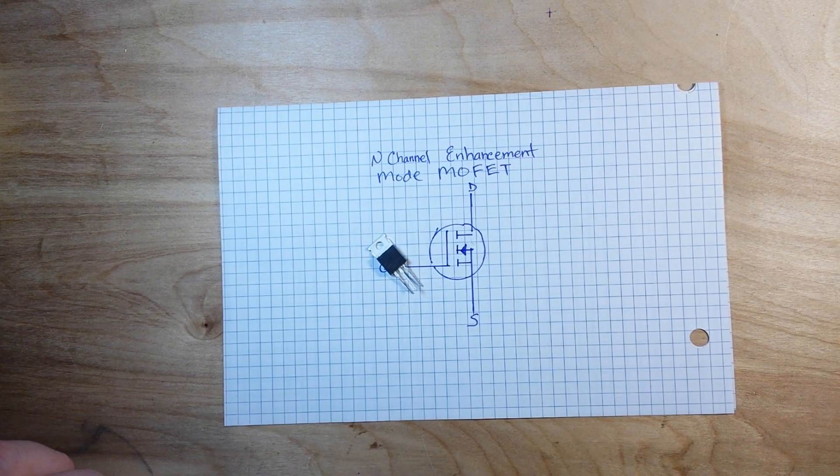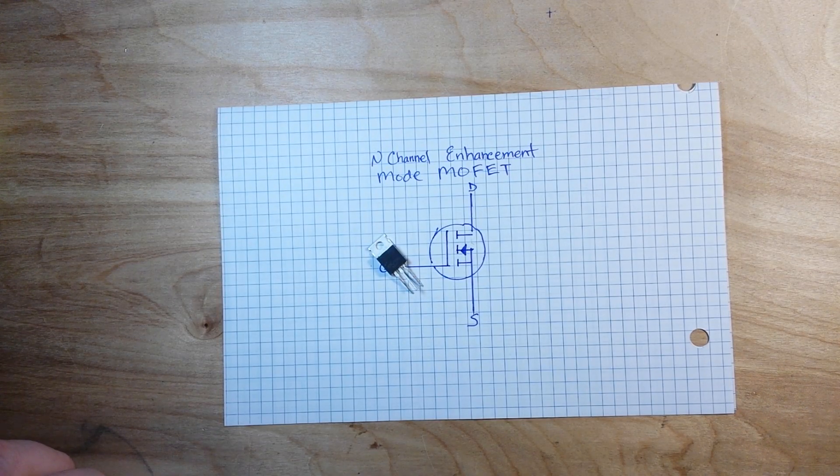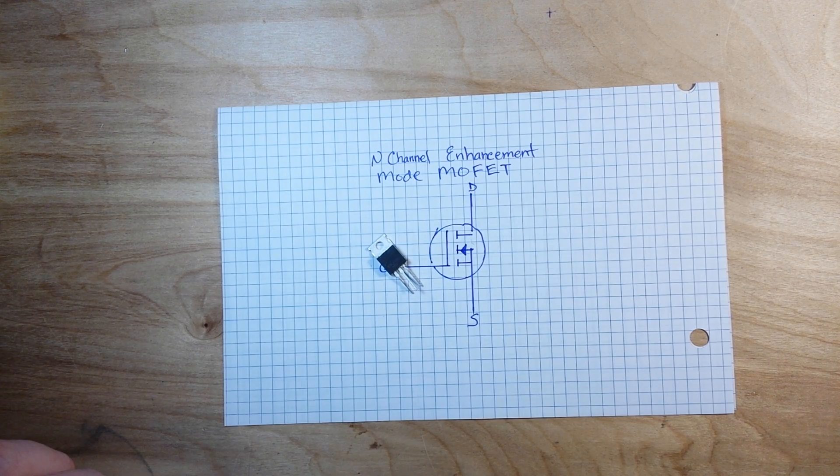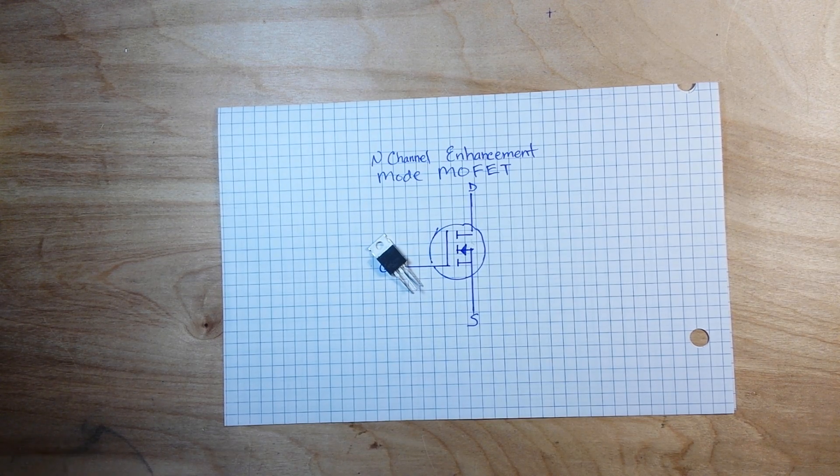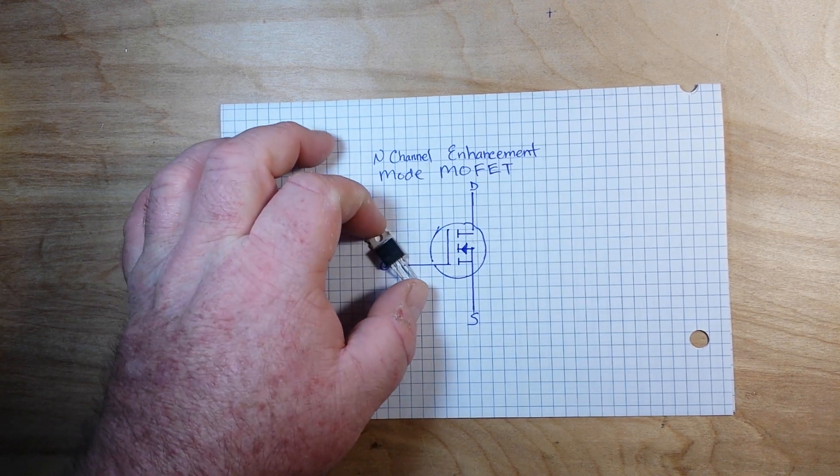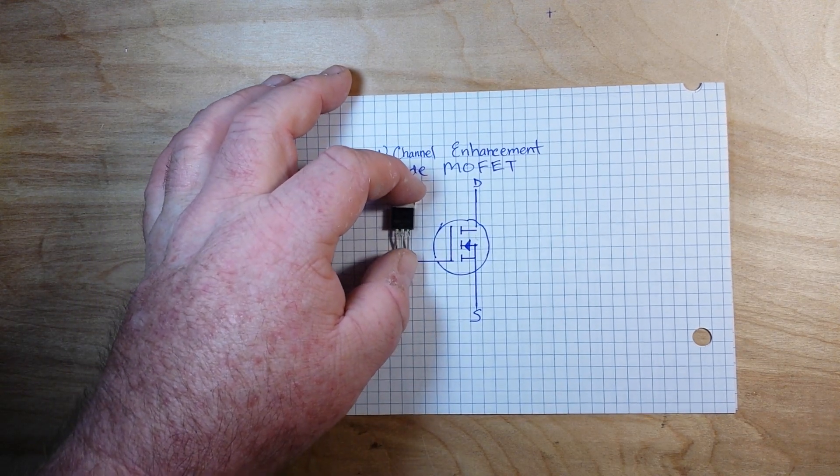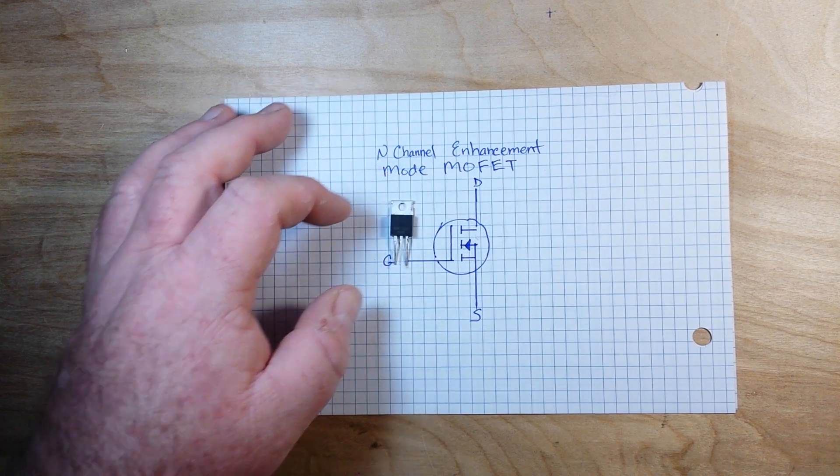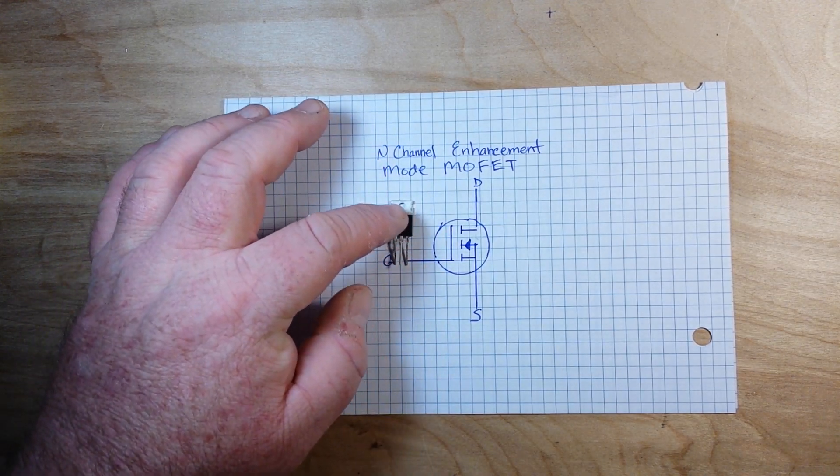Hey, what's happening guys, happy Sunday to you. I promised you a quick and dirty MOSFET video and that's what you're going to get today. So what I've got here is the IRF Z34N, an n-channel enhancement mode MOSFET.